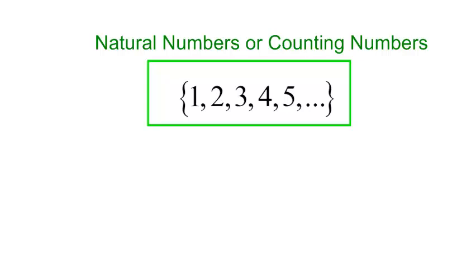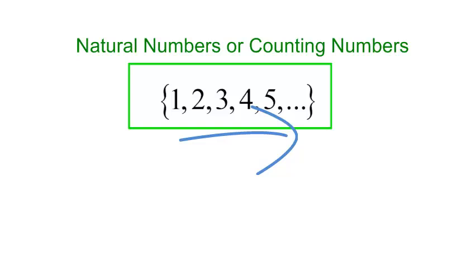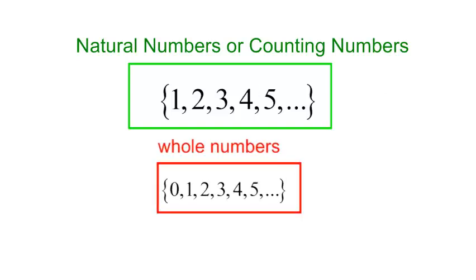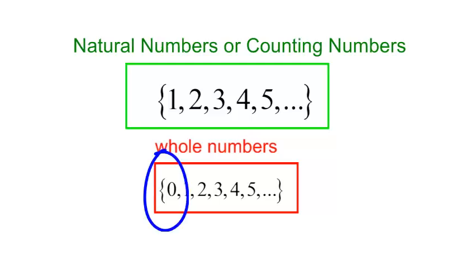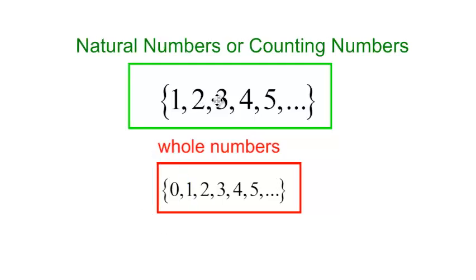Natural numbers — how would you count? One, two, three, four, five, six, seven — I could go on and on and on. Then I expand my group. I invite one more person to my party: I invite zero. These are the whole numbers — the natural numbers, but when I get to the whole numbers, I put zero in. So zero is invited to my party.